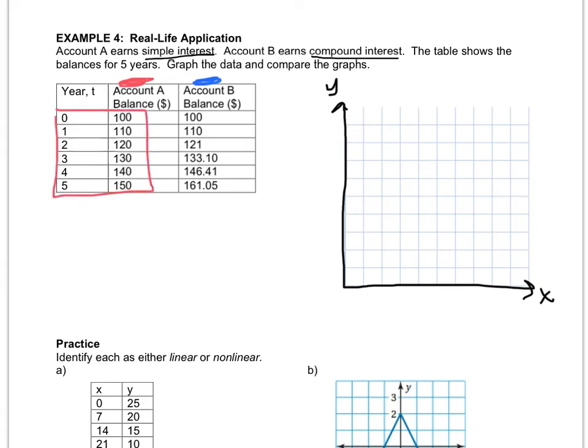So obviously you have to come up with a scale. Let's see if I can go by tens. Oh, I can. Oh, fantastic. So I'm going to make a little break here and I'm going to go by tens starting at 100. And this can go by ones. All right, so let me graph account A. Pause the video and graph account A.